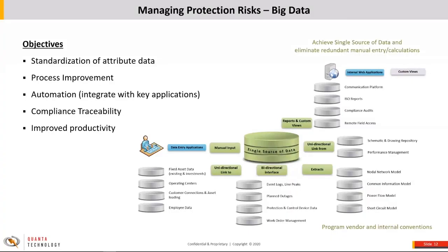When it comes to managing data, I want to emphasize how critical data management is for automation and scripting. In general, we want to standardize attribute data — not just at a protection and control level, but company-wide at a utility, standardizing names such as substations, device IDs, and equipment names, and coming up with acronyms that help with character limitations in different software.